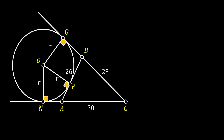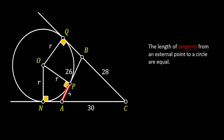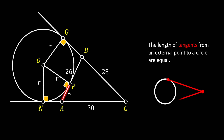Now, let's have a look at the line AP. We can label this line as X. We will use the property of a circle which states that the lengths of tangents from an external point to a circle are equal. So, if we label our points on the sketch exactly as shown, you can notice that line AN will actually be equal to line AP and will also have the length of X.